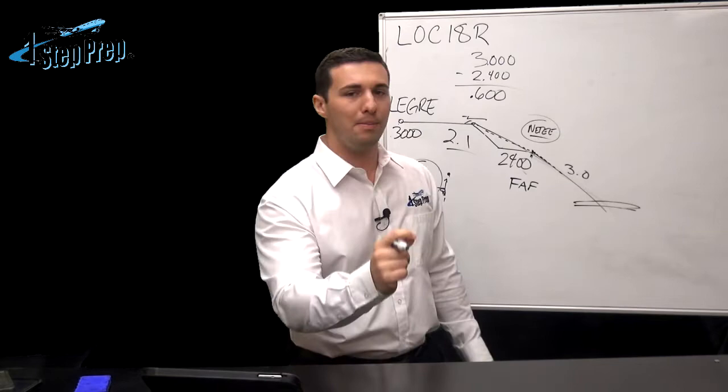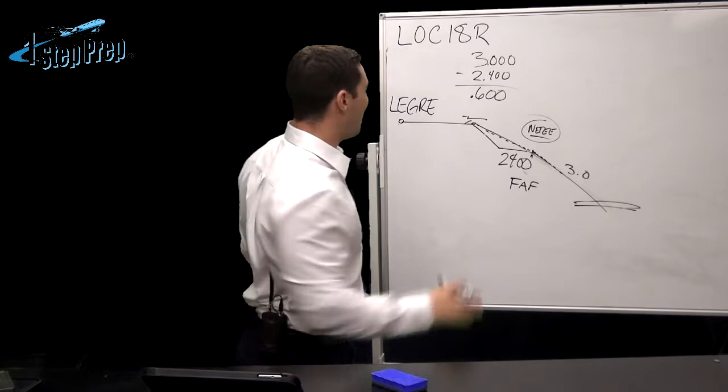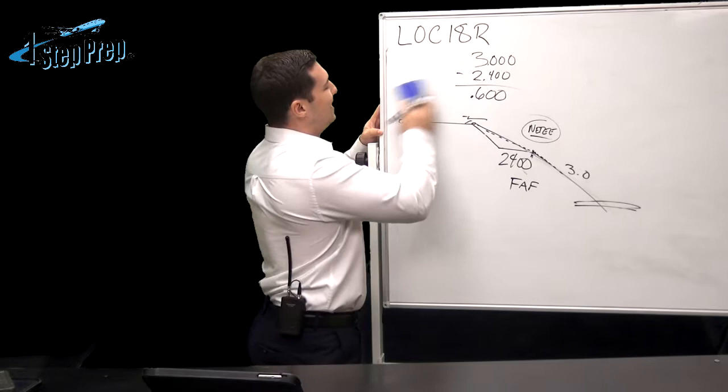Now, let's take a look here at how this actually would play out if they vectored you on to the approach. Not at 3,000 feet because, well, sometimes they don't do that, right? Sometimes they leave you a little bit higher. So no worries. Don't panic. So let's say they bring you in here at 4,000 feet.